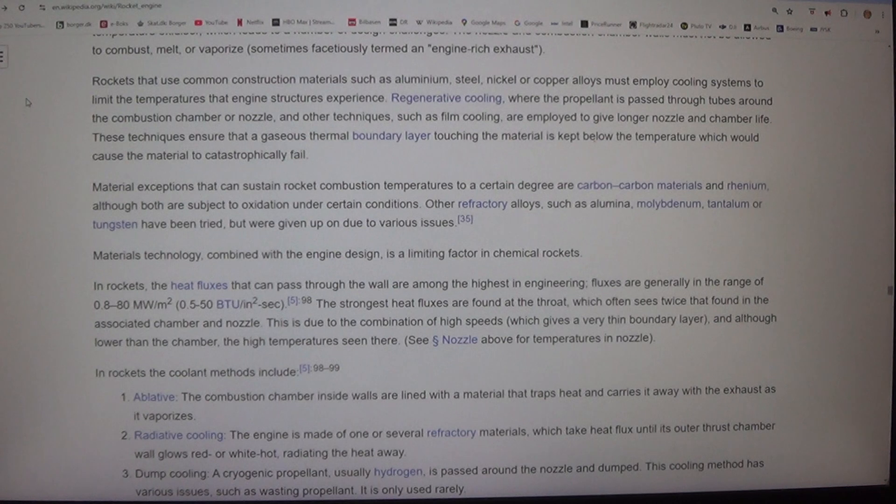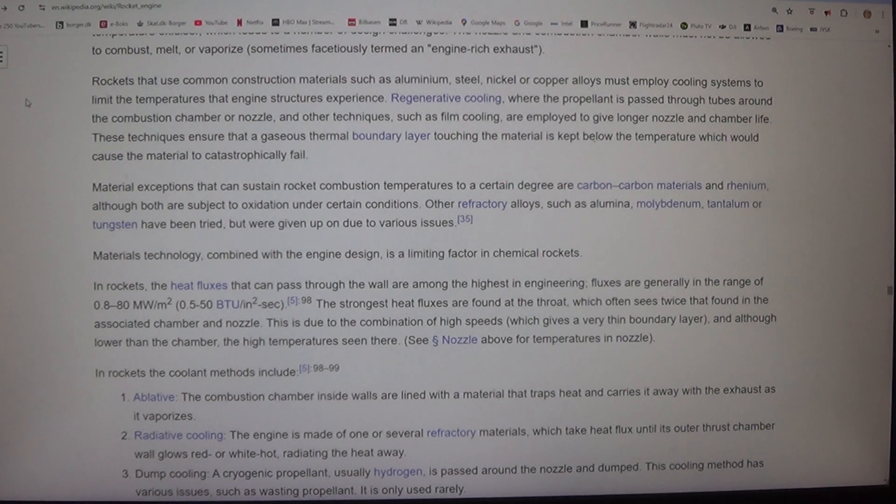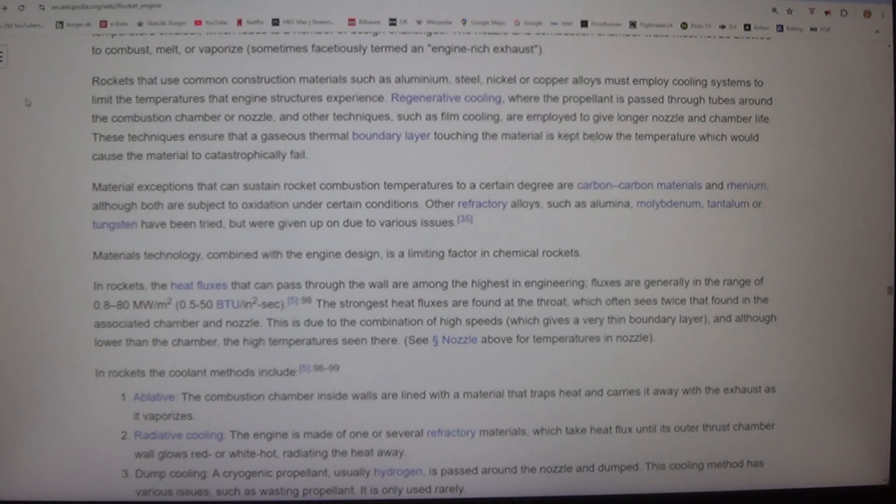Rockets that use common construction materials such as aluminum, steel, nickel, or copper alloys must employ cooling systems to limit the temperatures that engine structures experience.